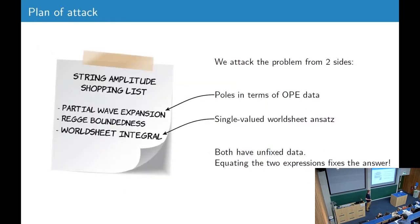And we want to fix these curvature corrections. So this is our plan how we want to do this. On one side, we will use the partial wave expansion to fix the pole structure of the amplitudes in terms of OPE data. And on the other hand, we make a single-valued ansatz for the worldsheet integral. Both expressions kind of have unfixed data, but by equating them, we can fix the unfixed coefficients and get an answer.